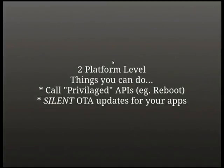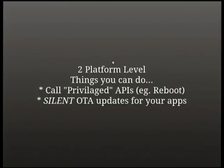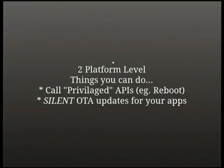For any further customization you need to go down one level to the platform. At the platform level, the first thing you can do is call privileged APIs — the ones your app can access if signed with the magic certificate embedded in the operating system when it was built. Some of them are documented openly even though no ordinary developer can call them. Others are hidden — in the open source project they have documentation, but there's a special tag that tells the SDK documentation generator not to display them publicly.